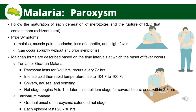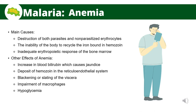For falciparum malaria, the onset of paroxysm is more gradual and the hot stage is extended, with each episode lasting 20 to 36 hours. The main causes of anemia include the destruction of both parasitized and non-parasitized erythrocytes, inability of the body to recycle iron bound in hemozoin, and the inadequate erythropoietic response of the bone marrow. Other effects include increased blood bilirubin causing jaundice, deposit of hemozoin in the reticuloendothelial system, and hypoglycemia.